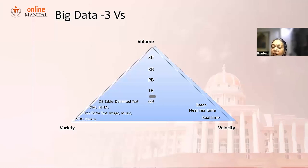And then we have variety. In terms of variety, we talked about structured data, unstructured data, delimited text, binary text, et cetera.